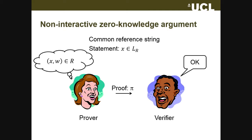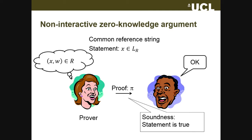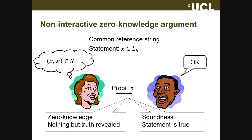Completeness says that if the prover really has a witness and the statement really does belong to the language, it should be possible to convince an honest verifier. We want two security properties: first is soundness, that if the verifier accepts the statement, it's because the statement really is true, X really does belong to the language. The second is zero knowledge, that the proof does not reveal anything but that the statement really belongs to the language, typically defined through having a simulator that can simulate proofs.